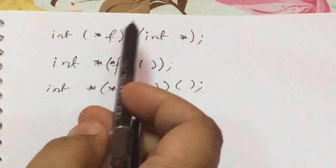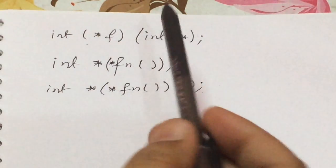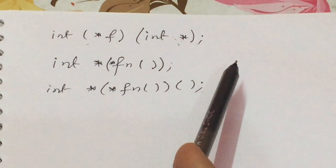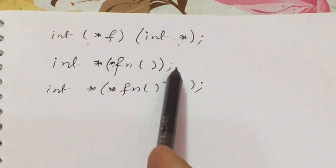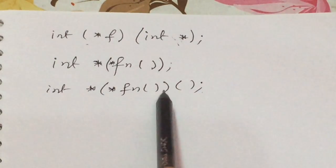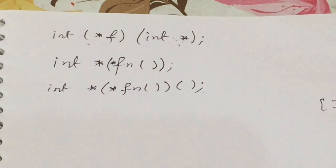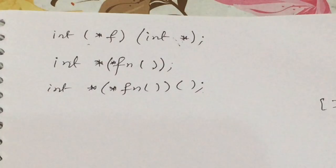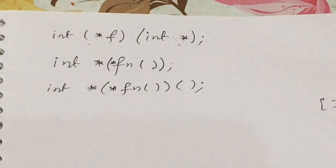To solve this type of problem, you have to remember something. Whenever you encounter the asterisk mark, you have to read it as 'pointer to'. Whenever you encounter the function symbol — the parentheses — you have to say 'function returning'. And whenever you find the array symbol, you have to say 'array of'.